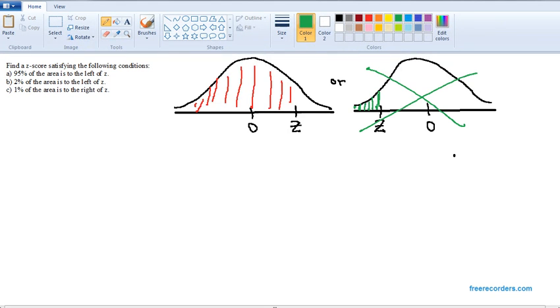So that tells us that z is positive. Now, if 95% of the area is to the left of z, that means this red area has to be 0.9500.